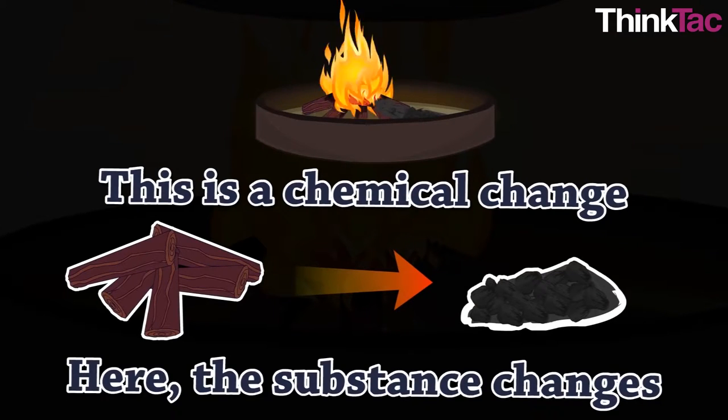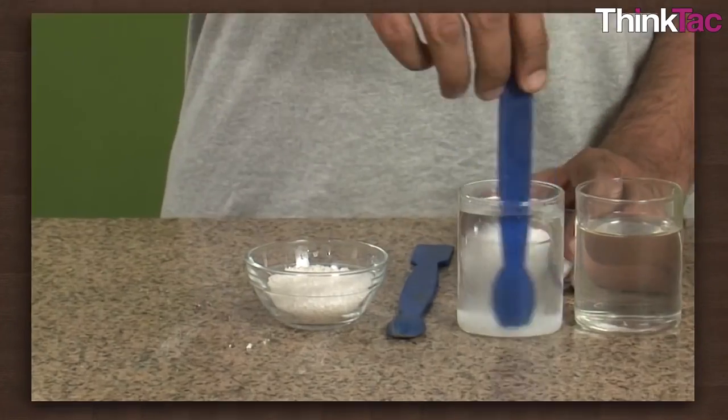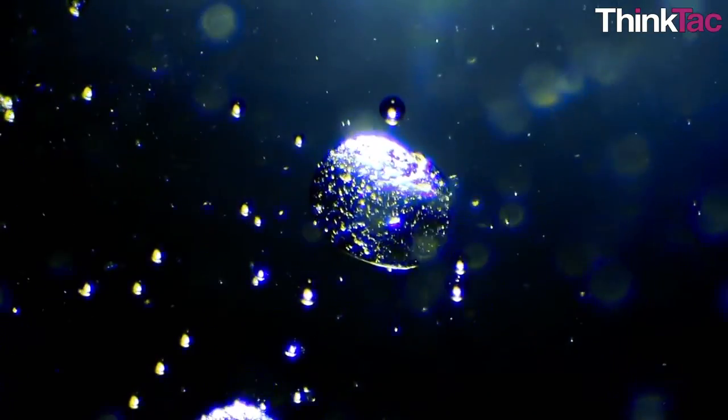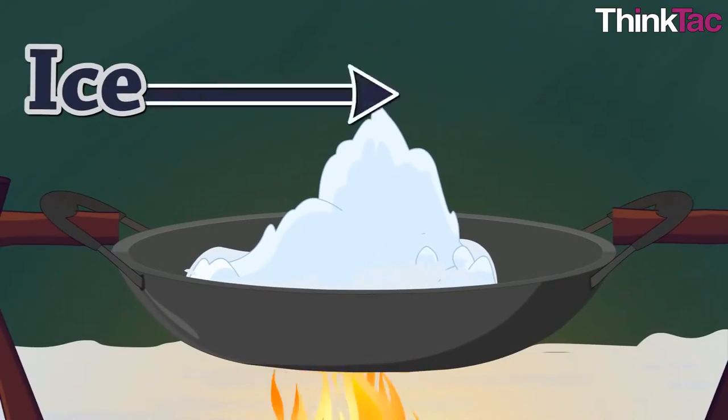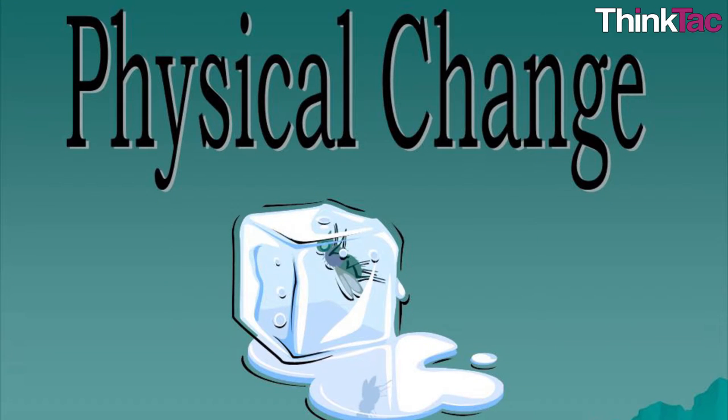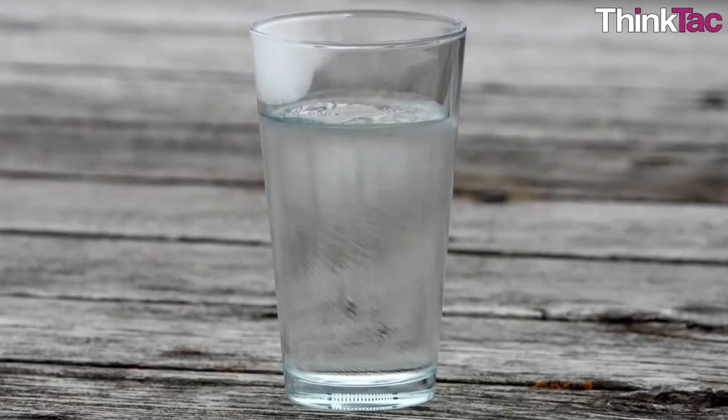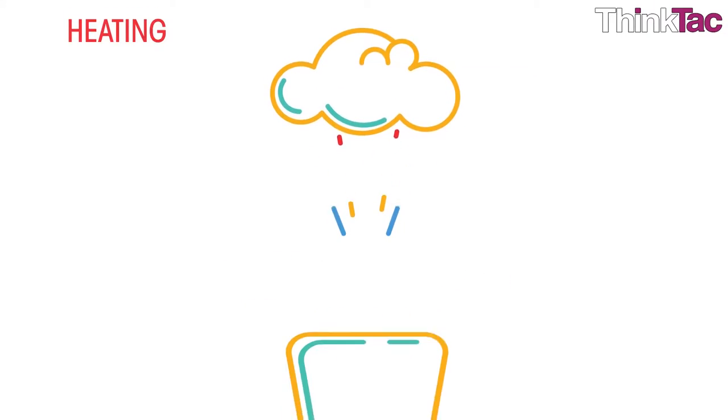In general, a physical change is reversible using physical means. For example, salt dissolved in water can be recovered by allowing the water to evaporate. Same goes for ice—you can convert it back into water. Physical changes involve change in physical properties, for example when water freezes it forms ice and ice melts down to form water at normal temperatures.